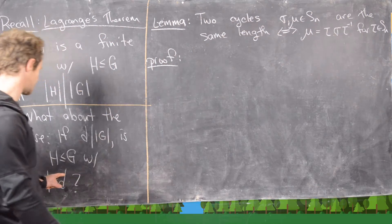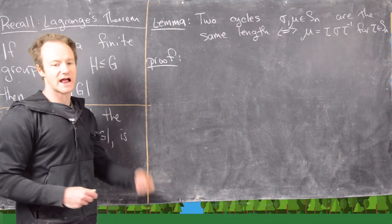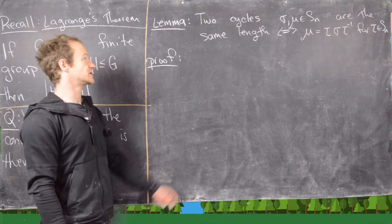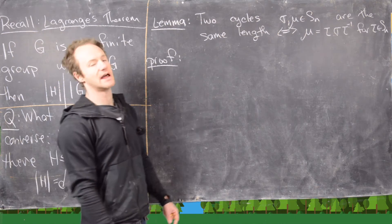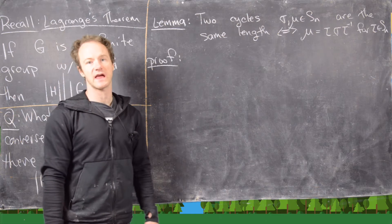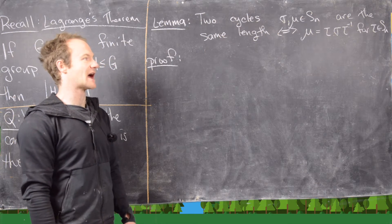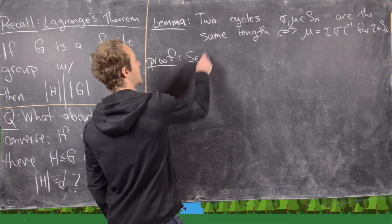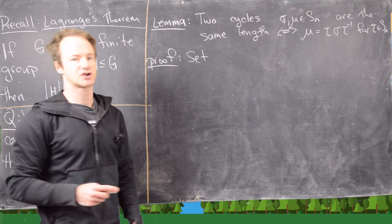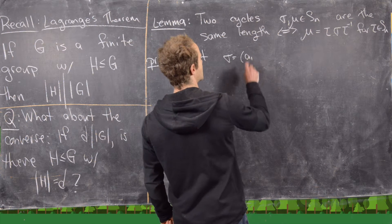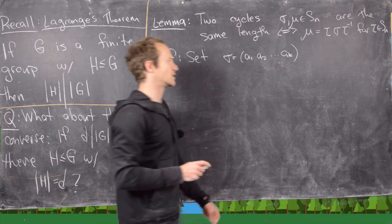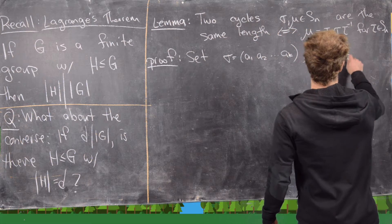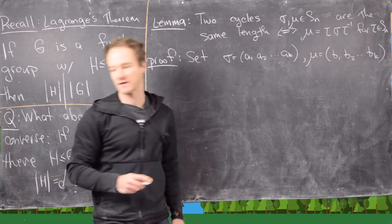In order to answer this in the negative, we need the following lemma, which will help us construct an example of a group that doesn't have a subgroup for one of its divisors. Two cycles sigma and mu in SN are the same length if and only if mu equals tau sigma tau inverse for some tau in SN — in other words, they are conjugate to each other. Let's set sigma equal to the cycle (A1, A2, ..., AK), so it has length K, and mu equal to the cycle (B1, B2, ..., BK), also of length K.